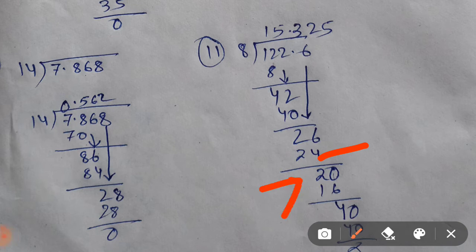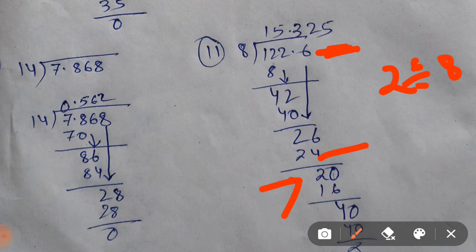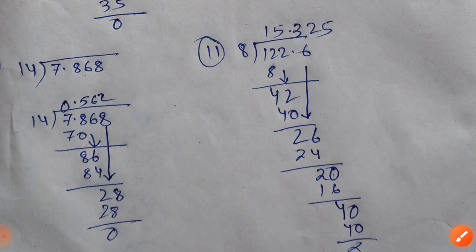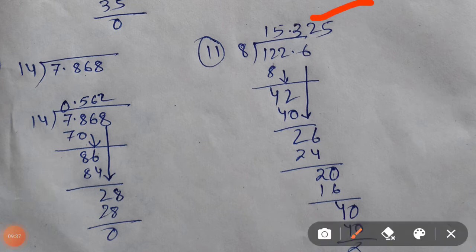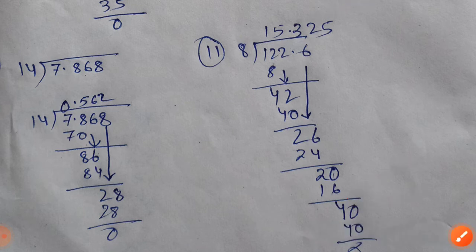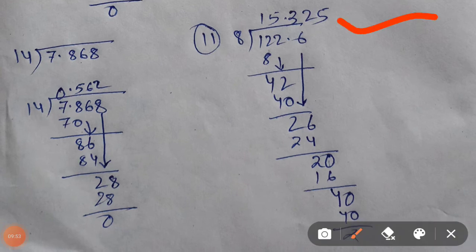You will get 2. Since we have 2 and there is no number left, we cannot divide 2 by 8. Because of this decimal point you will get an extra 0. Put that 0 here. Now 8 times 2 is 16. Subtract 16 out of 20 you will get 4. Again 4 is smaller than 8, so we take again one extra 0 because of the decimal point. Now 8 times 5 is 40. Your final answer will be 15.325.